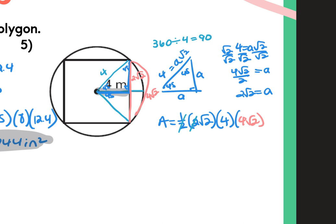The one-half and 2 cancel out. Simplifying: 4 times 4 is 16, and √2 times √2 is 2, giving an area of 32. If you multiply it out in the calculator, you'd get the same answer.